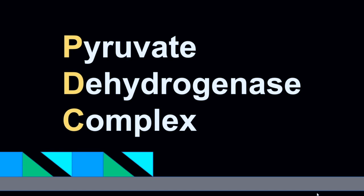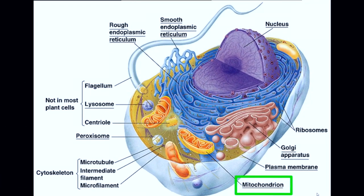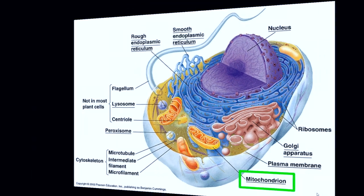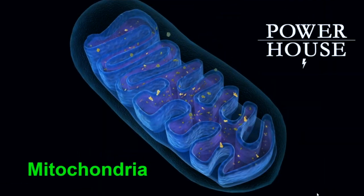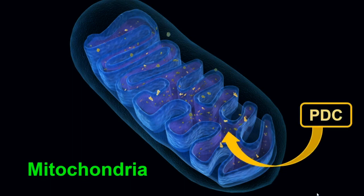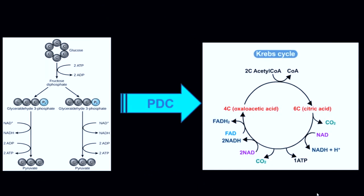But where is this special molecule? It's located inside a human cell. Within each cell we have mitochondria, also known as the powerhouse of the cell, and in the mitochondria matrix — right there — is where the PDC is located.